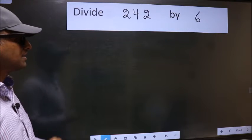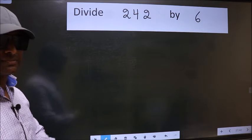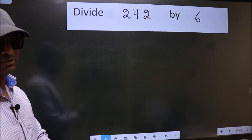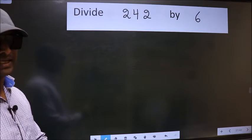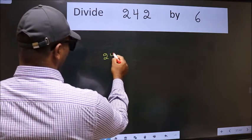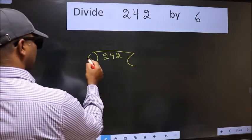Divide 242 by 6. While doing this division, many make a mistake. What is the mistake that they do? I will let you know, but before that we should frame it in this way: 242 divided by 6.